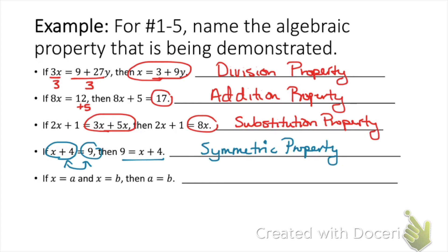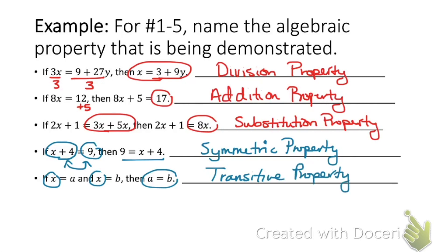The last one: if x equals a and x equals b, then a must be equal to b. We have two things equal to the exact same thing, which means they must be equal to each other — this is our transitive property.